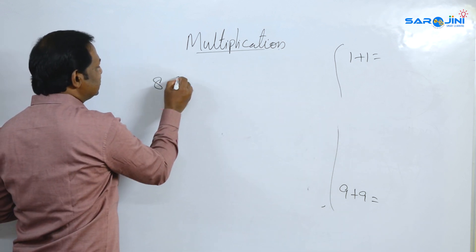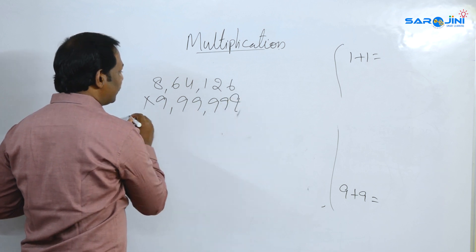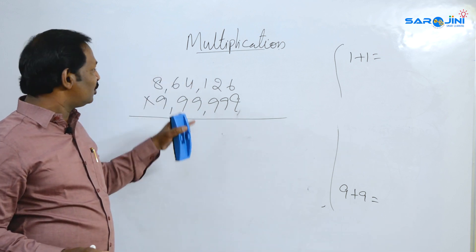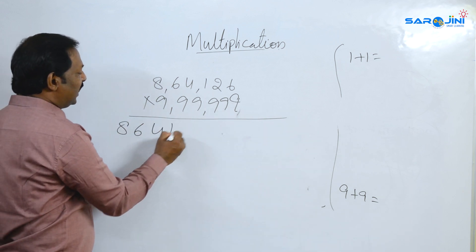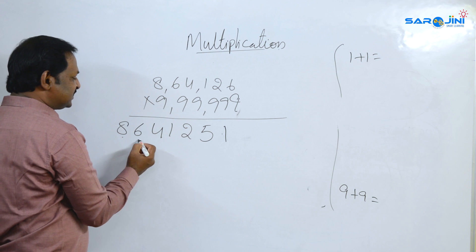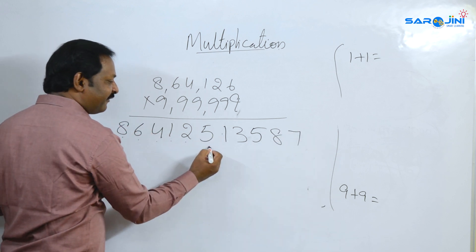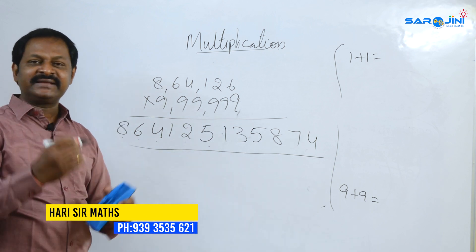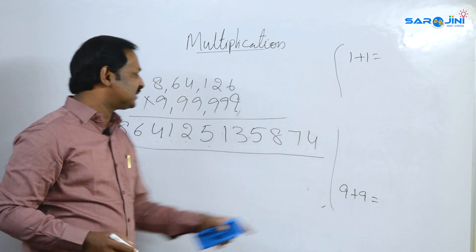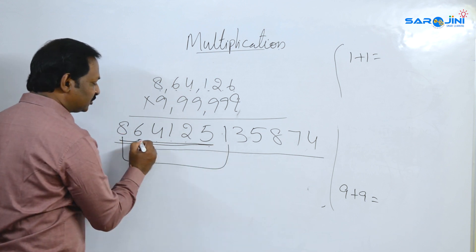Large example: 8,64,126 multiplied by 9,99,999. You have six digits — 1, 2, 3, 4, 5, 6 — six digits in each part. Set out the same reconciliation to get the answer.